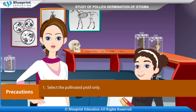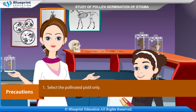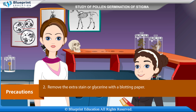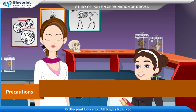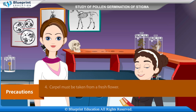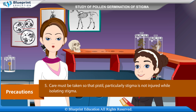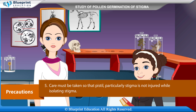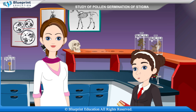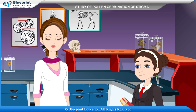Precautions: Select the pollinated pistil only. Remove extra stain or glycerine with blotting paper. Mounting should be free from air bubbles. The carpel must be taken from a fresh flower. Care must be taken so that the pistil, particularly the stigma, is not injured while isolating. Thank you. We have understood the experiment very well.